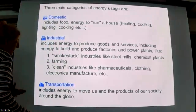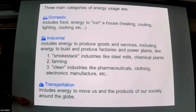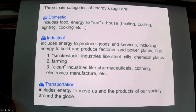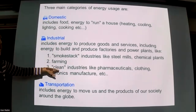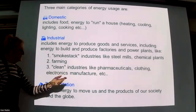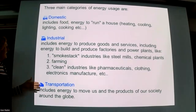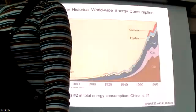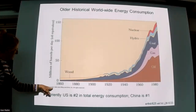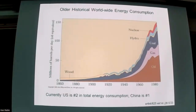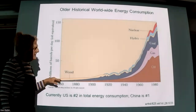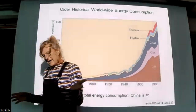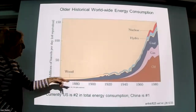There are three main categories of energy usage: domestic, industrial — which includes agriculture along with smokestack industries and clean industries like pharmaceuticals, clothing, and electronics — and transportation. For most average Americans, transportation is the lion's share of energy use. Looking back at a copyright 1899 — so about 25 years ago — similar plots to today's projections showed energy utilization increasing for all types common in the mix.